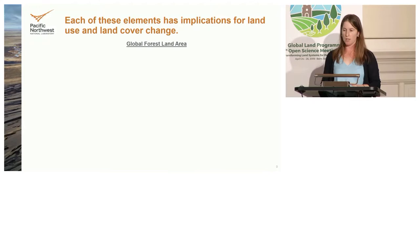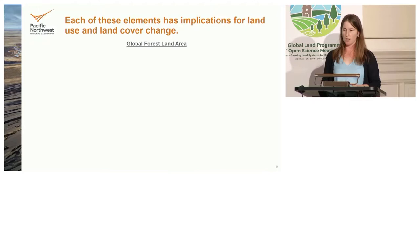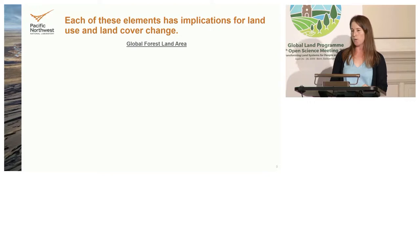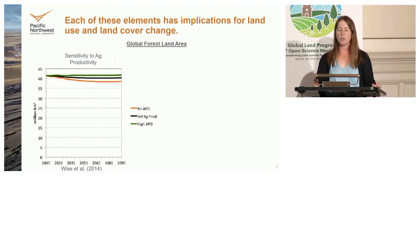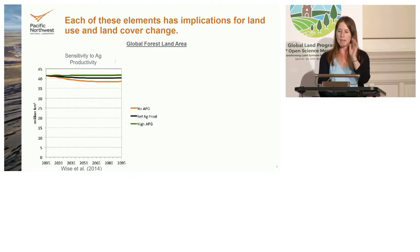Since these storylines have multiple moving parts, I'll start by looking at how individual factors influence land use and cover within one model. For forest land, you can look at how sensitive forest area is to yield growth or agricultural productivity. Where yields stagnate, you get increases in cropland area and less forest. At the other extreme, if you have very high yield increases, you can keep more forest cover because you need less cropland and there's less expansion pressure.